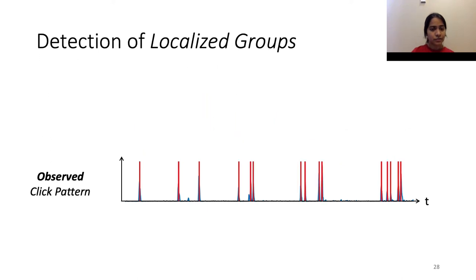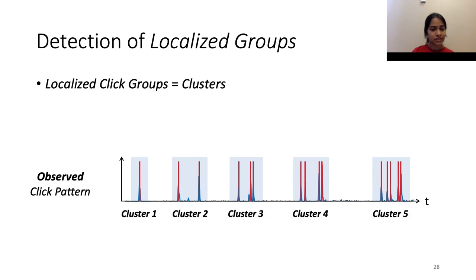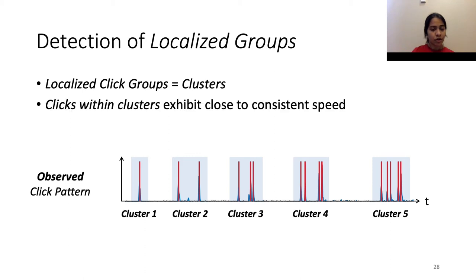As a solution to this, we propose the detection of what we call localized groups. In a majority of keys, clicks tend to occur in localized groups as shown here. We call such localized groups clusters, and in this case we observe up to five clusters. We make an important observation that clicks within clusters exhibit close to consistent speed. Due to this, by detecting clusters from key insertion audio, we will be able to perform pattern matching within clusters and hence solve the first challenge of inconsistent insertion speed.